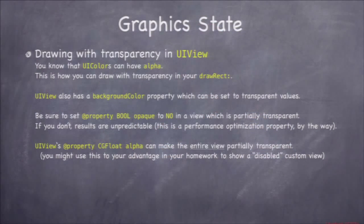The opaque property is a hard optimization — it just won't work correctly if you don't set it right. If you want your view to be transparent, set opaque to NO and also set your background color to nil so it doesn't fill with a background. You can also make the entire view transparent using the alpha property — set it to 50 percent and everything in the view will be 50 percent see-through. You can also draw using transparent colors to achieve per-element transparency.